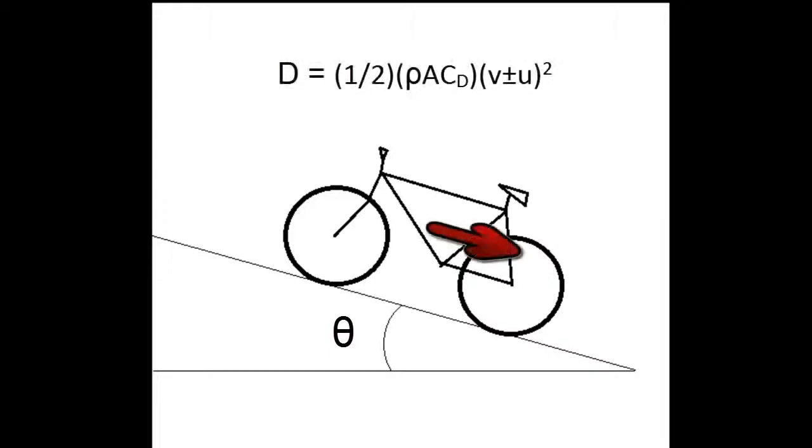Finally, the air drag d, which is equal to 1 half rho A CD v plus or minus u square, where rho is the density of air, A is the cross-sectional area against the wind, also known as the frontal area of the bicycle and rider, and CD is the coefficient of drag between the bicycle and rider with the air.